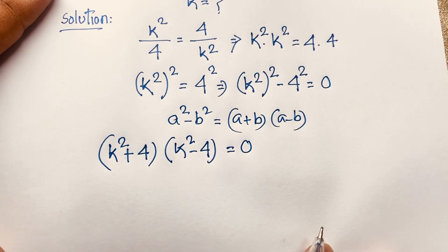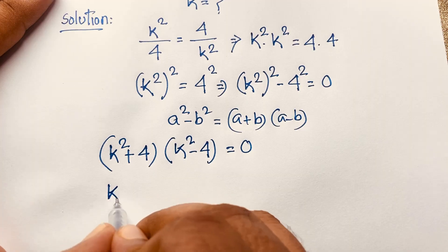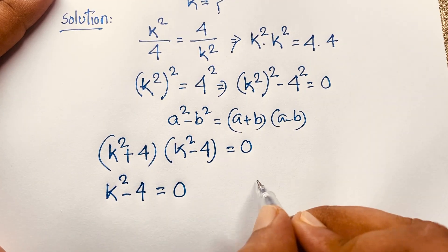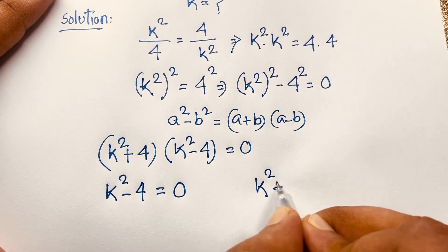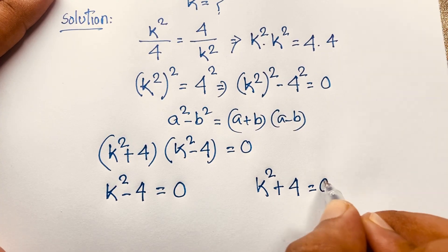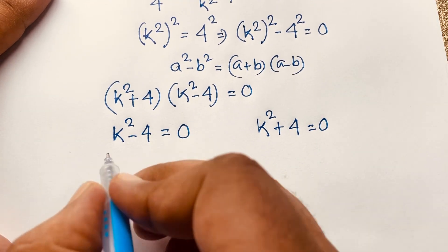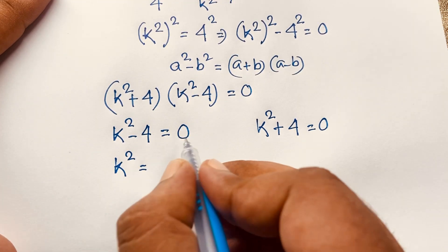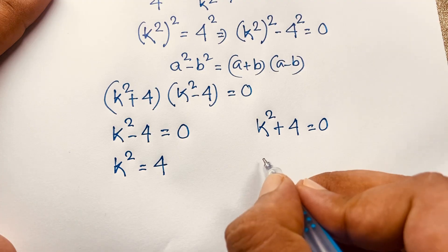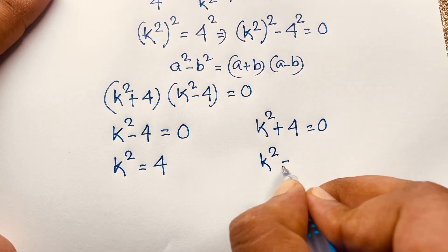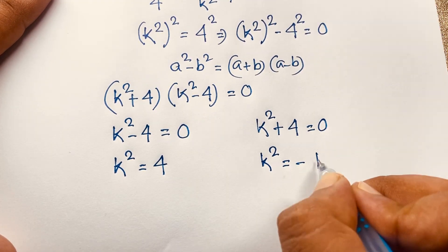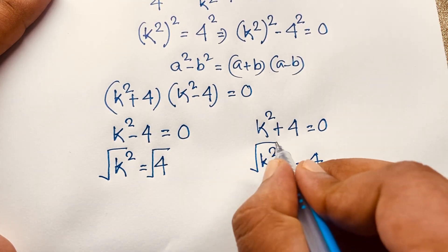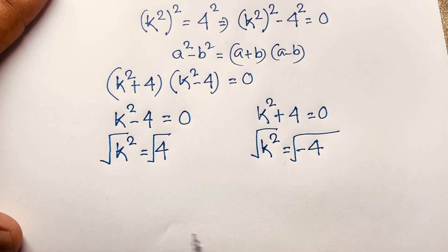We have two cases. The first case is k squared minus 4 equals 0, and the second case is k squared plus 4 equals 0. For the first case, k squared equals 4.